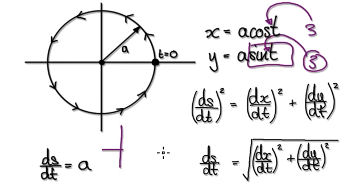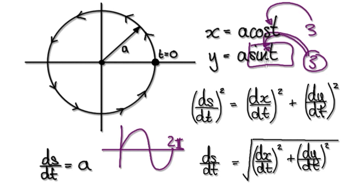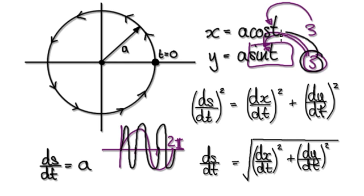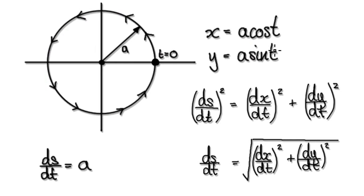If you look at this, normally the period would be 2pi — the time it takes to do one revolution would be 2pi. But if you stick a 3 in front of here, then the period would be much faster: 1, 2, 3 revolutions. So if you stick a 3 in front of the t, then the time to do one revolution would be much faster than without the constant.